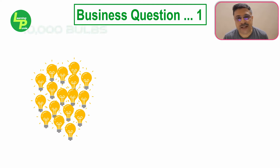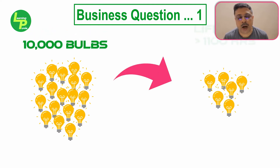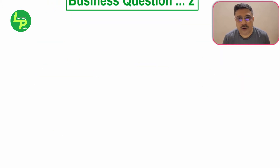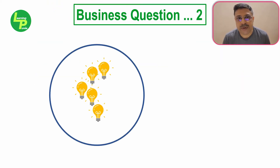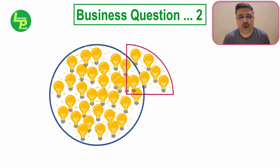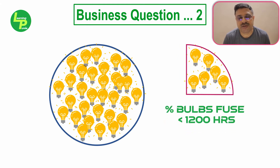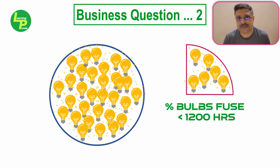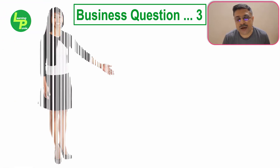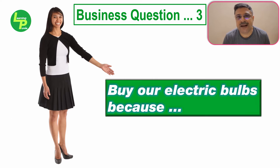In a batch of 10,000 bulbs manufactured, how many bulbs have a lifespan of 1100 hours or more? What is the percentage of bulbs expected to fuse before 1200 hours of service? What kind of an advertising claim can the manufacturer make?